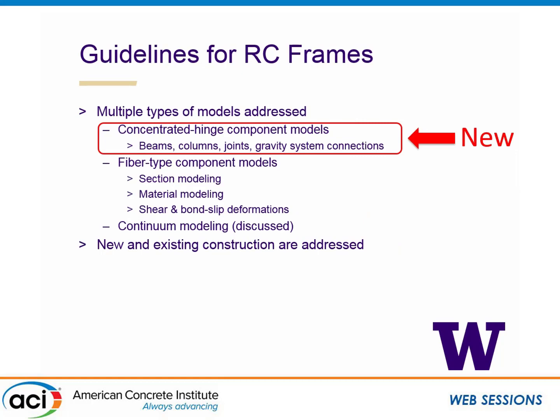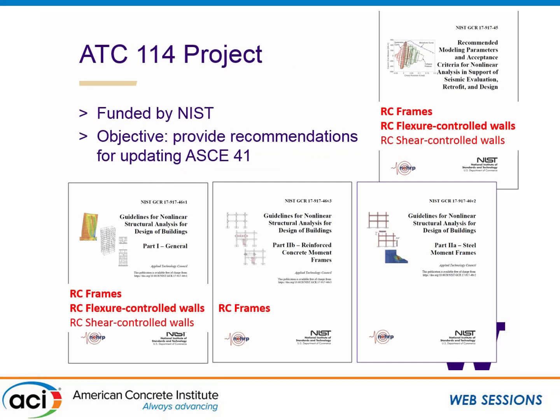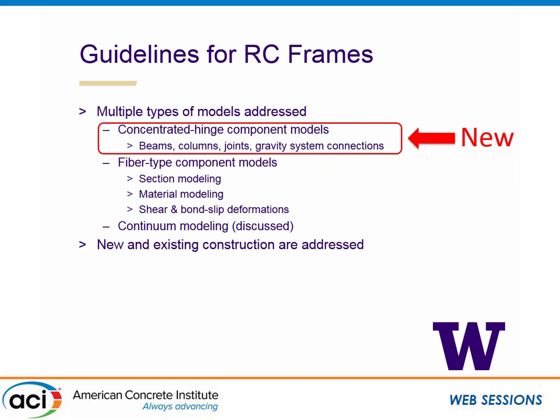The guidelines specifically for reinforced concrete frames is a document providing guidance on RC frames — mostly discussion of how one might go about building a model and what you should think about when doing analysis of reinforced concrete frames. There's information about different types of models; the bulk is focused on concentrated hinge models and fiber-type hinge models, with guidance on section modeling. There's a very brief discussion of continuum modeling, and it addresses both new and existing construction.